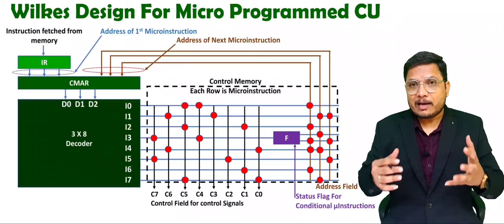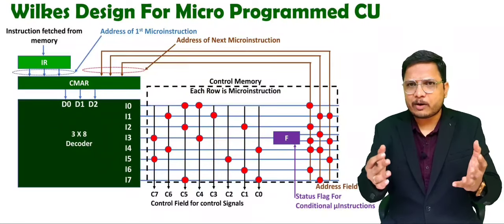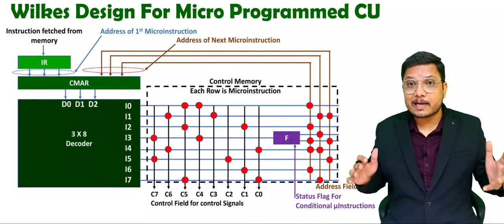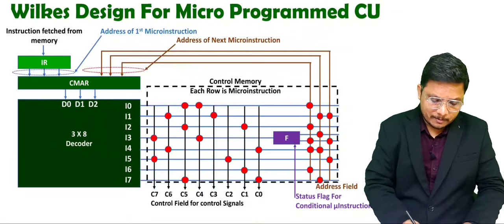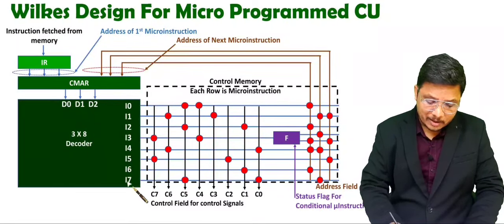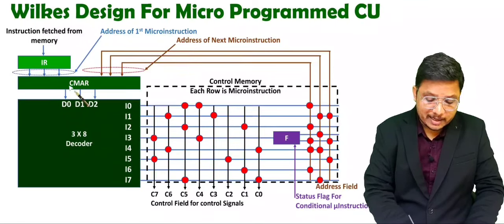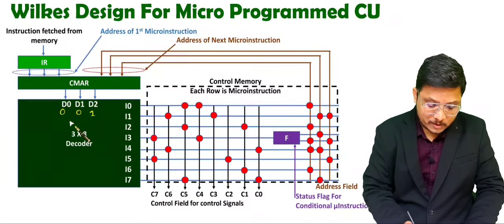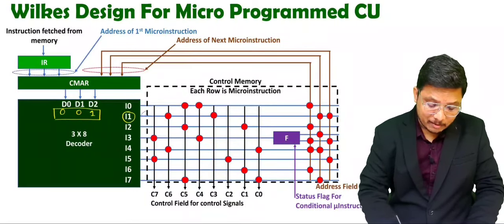For a large micro-instruction, you would need a larger decoder. For explanation purposes only, I have considered a 3x8 decoder — it is not a fixed requirement, you can have a larger decoder if you have many micro-instructions. This 3x8 decoder is generating micro-instructions I0 to I7, which is 8. For example, the IR is giving the first address of the micro-instruction as 001. As per 001, I1 should get selected.